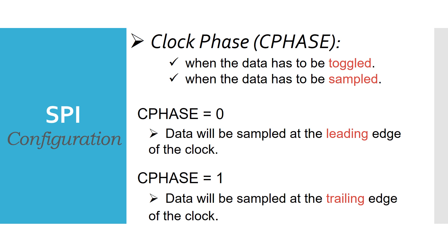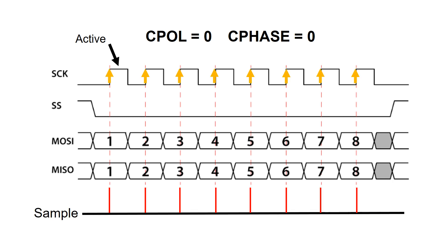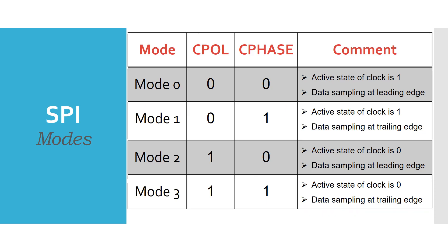Let's try to understand this concept with an example. Consider CPOL configured to 0, meaning the active state of the clock is 1, and CPHASE configured to 0, meaning data will be sampled at the leading edge of the clock. This is SPI communication mode 0. Based on the configuration of CPOL and CPHASE, SPI communication can be configured in four possible modes, which is quite helpful during configuring and debugging the protocol.